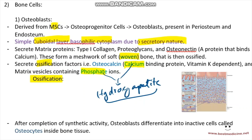The greater the hydroxyapatite content of a bone, the greater its tensile strength. That covers the osteoblast — let's jump on to the osteocytes.